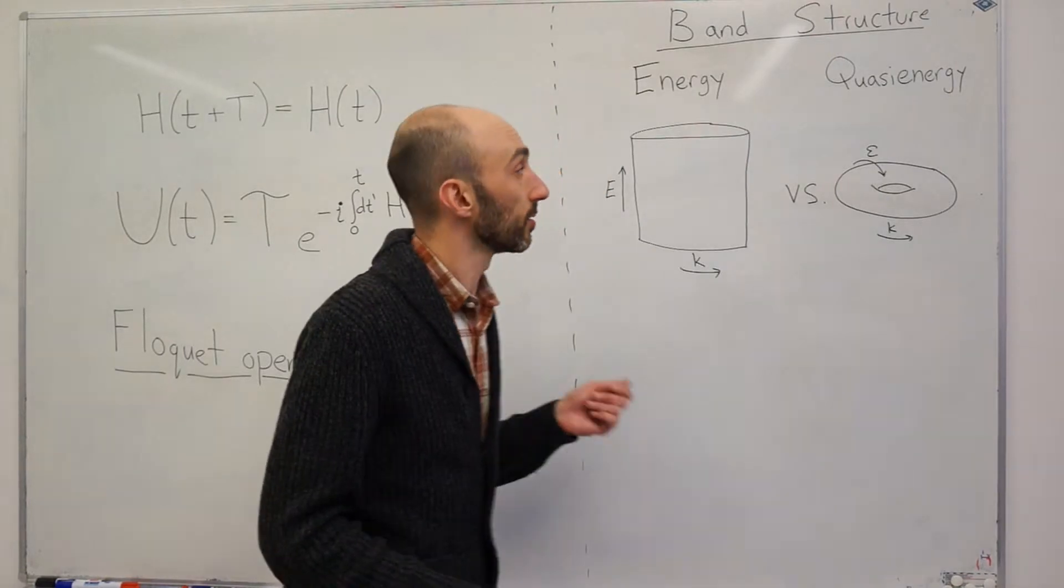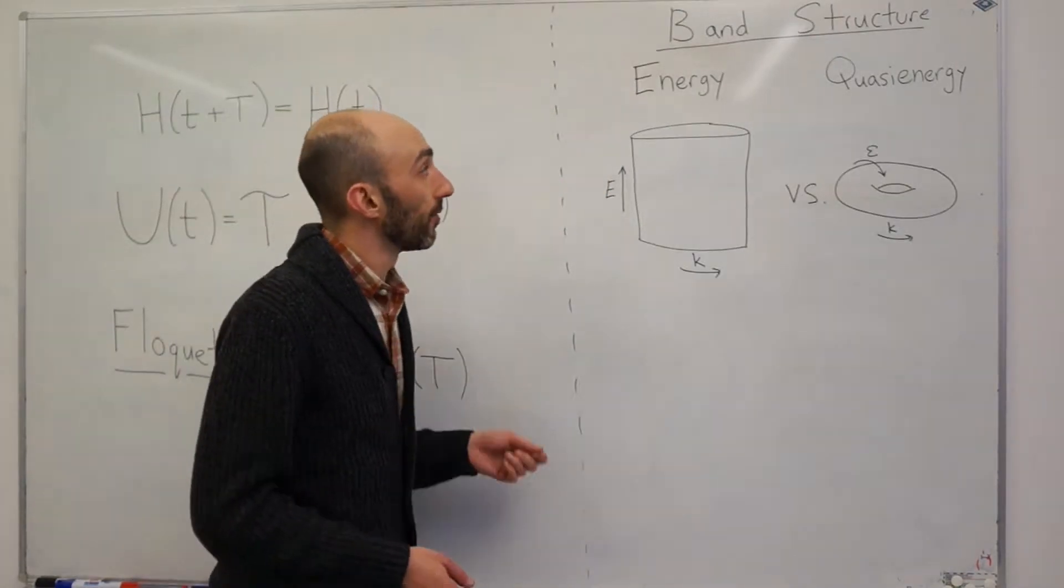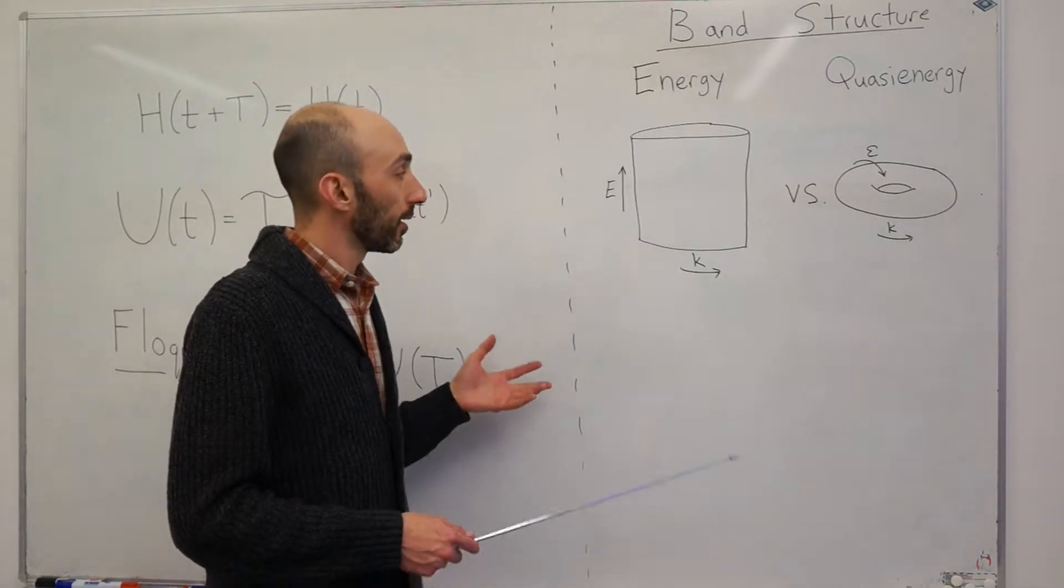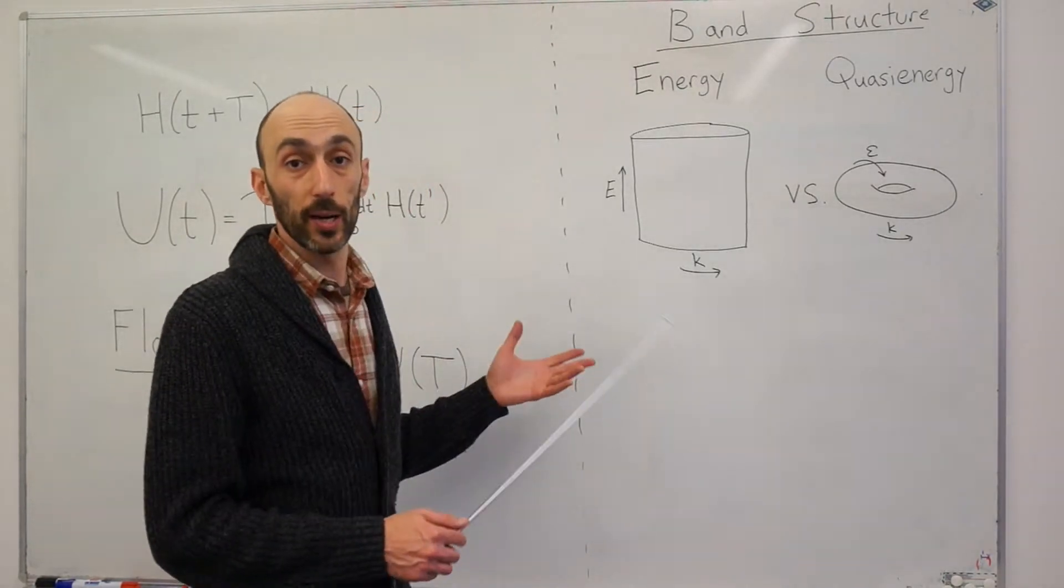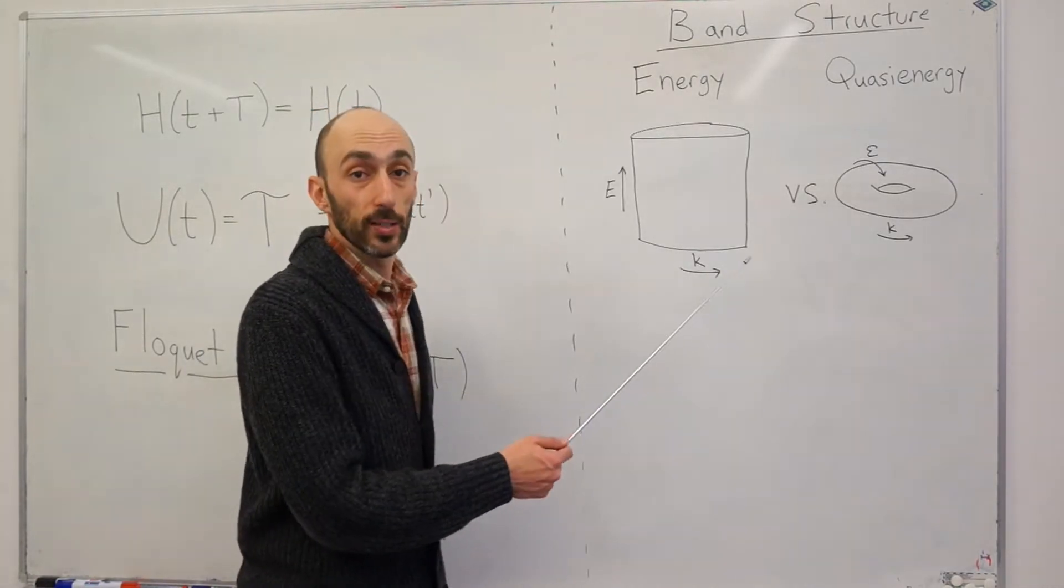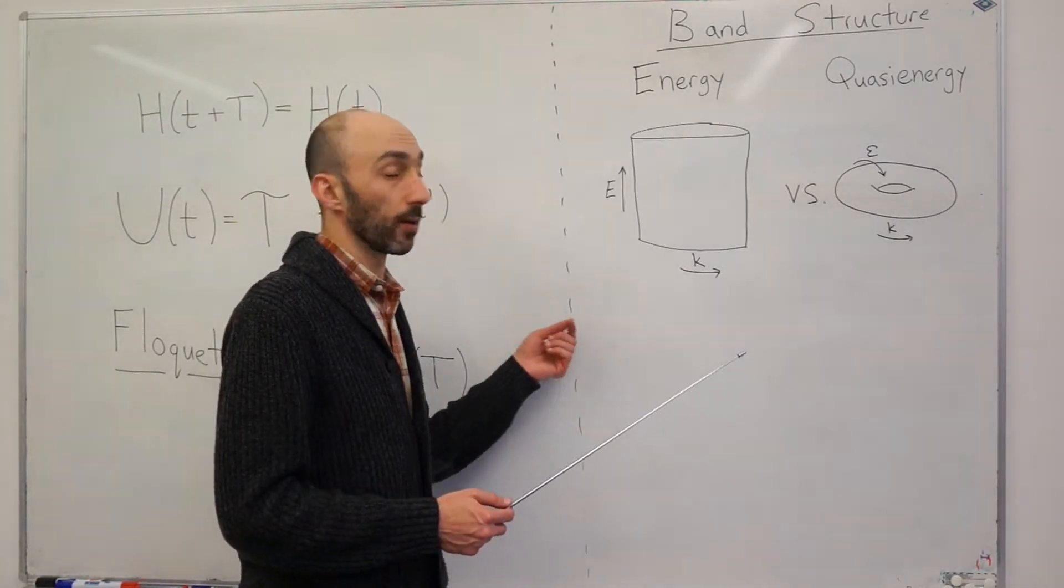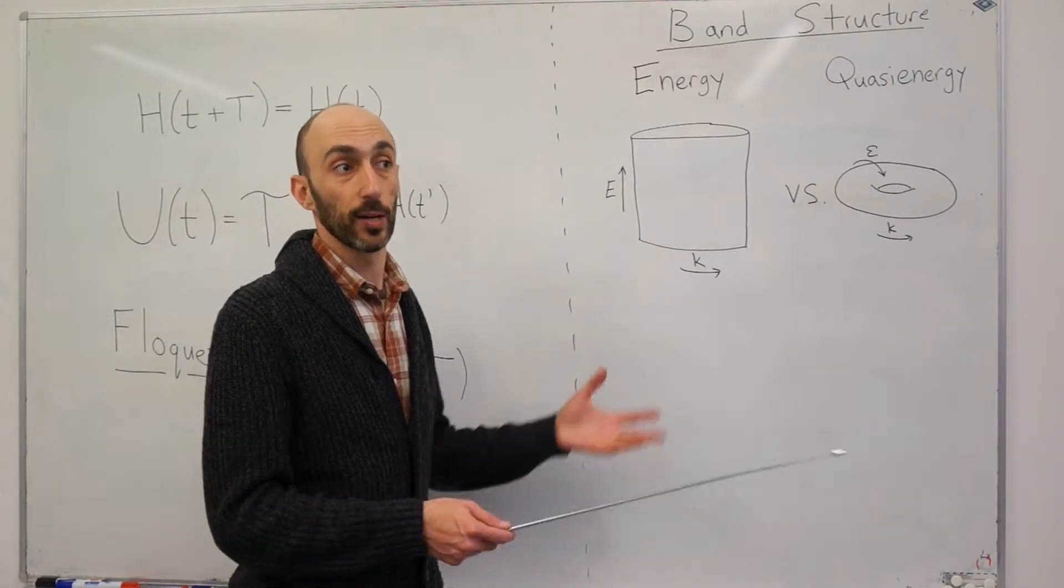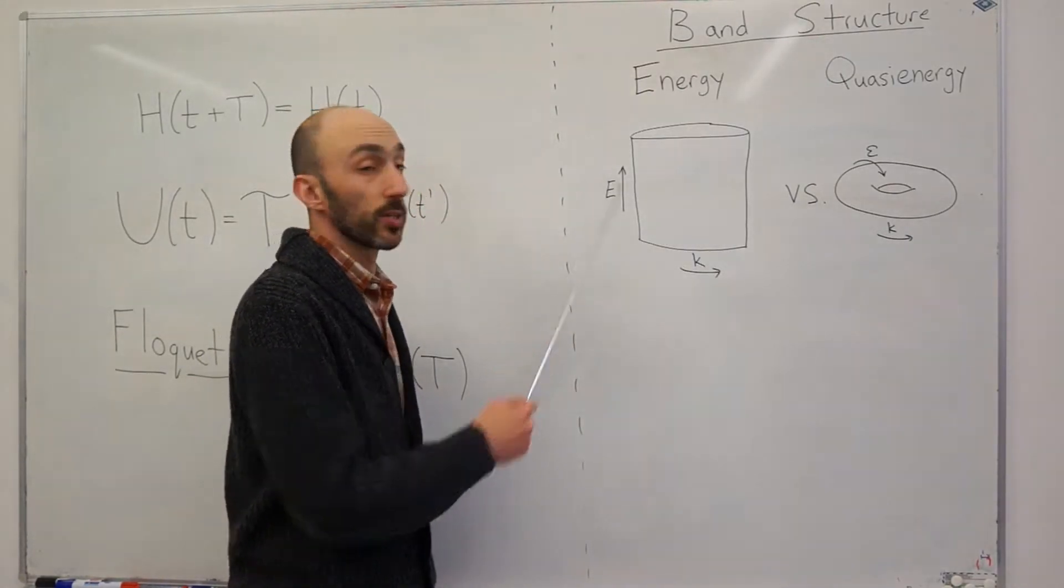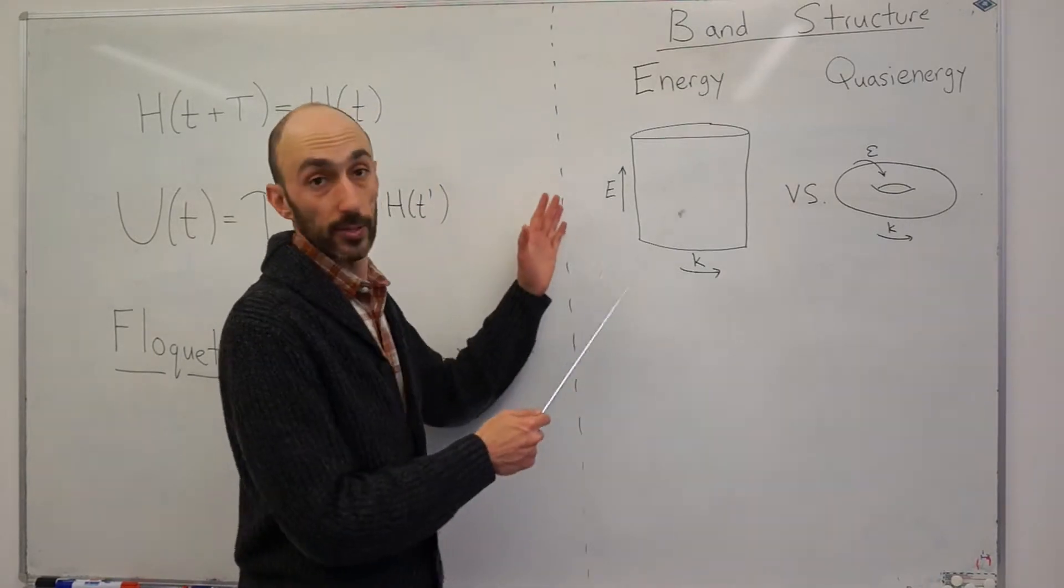However, there's some very important differences. In particular, if I think about a band structure, then in a non-driven system, I can imagine that this band structure lives on some kind of cylinder. What do I mean? Well, I have the crystal momentum, which parameterizes a circle if it's one dimensional, or some kind of torus if it's higher dimensional, and then there's energy, which is a real number. Therefore, this is some kind of cylinder here.